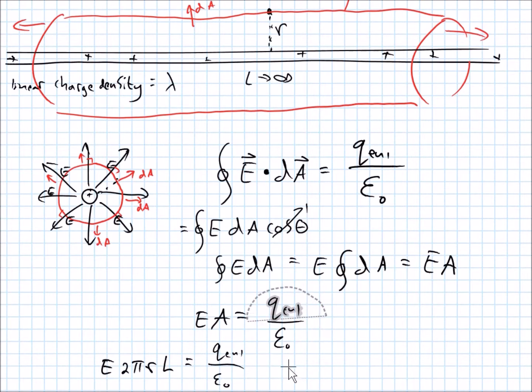Now, the charge enclosed by the Gaussian surface, well, that's also infinite, right? But we do know the charge density. So we can rewrite that as the linear charge density times the length that gives you the charge. The entire charge, right? Because linear charge density is total charge divided by total length.